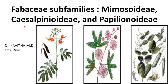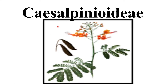Good morning students. Today I am going to explain about Fabaceae subfamilies: Mimosoideae, Caesalpinioideae, and Papilionoideae. The Fabaceae family consists of three subfamilies, and I am going to explain each subfamily in detail. First, I will explain about Caesalpinioideae.